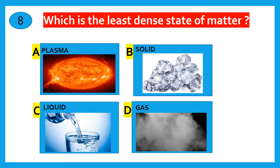Plasma, solid, liquid, gas. Which is the least dense state of matter? Plasma, solid, liquid, gas. The current answer is plasma.